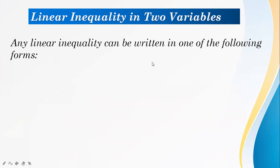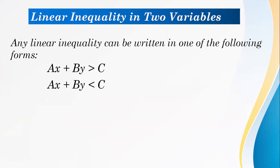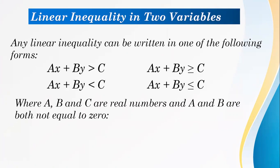Any linear inequality can be written in one of the following forms: Ax plus By greater than c, Ax plus By less than c, Ax plus By greater than or equal to c, or Ax plus By less than or equal to c, where A, B, and C are real numbers and A and B are both not equal to zero.